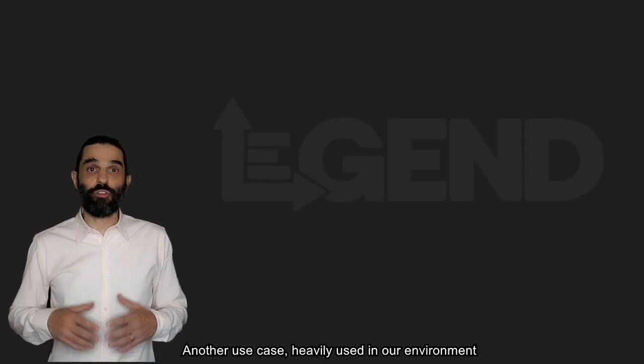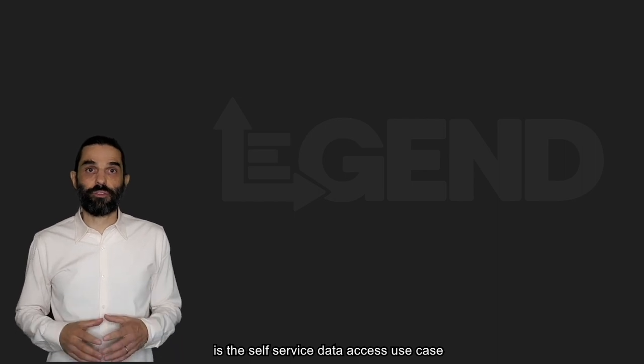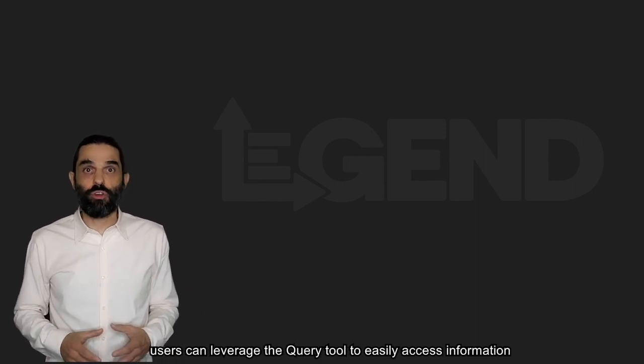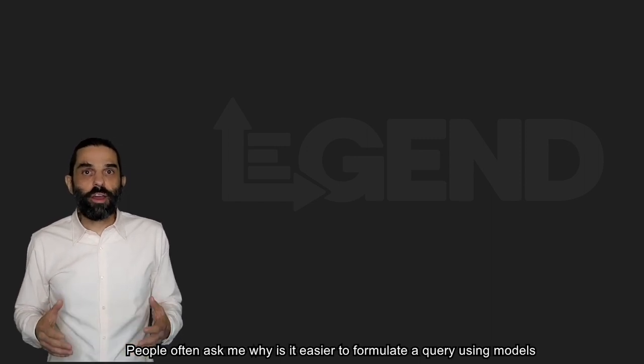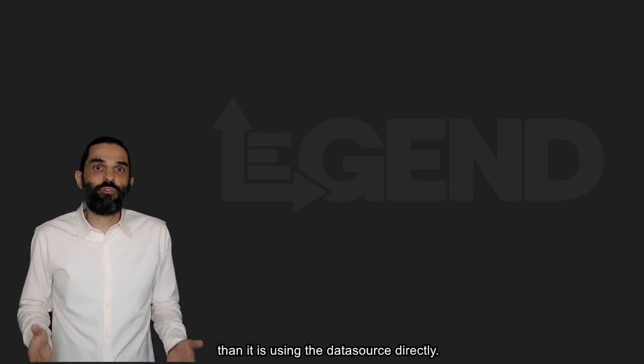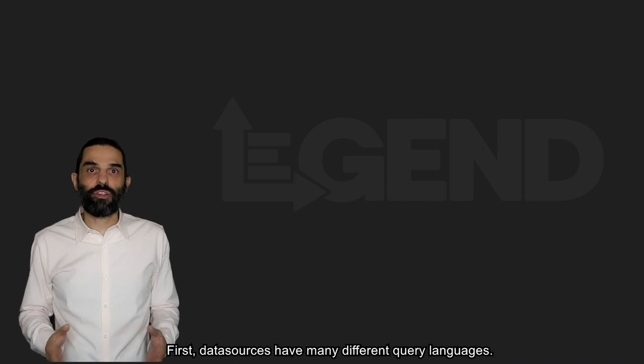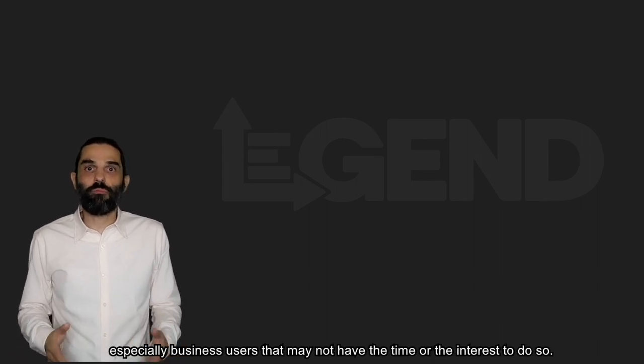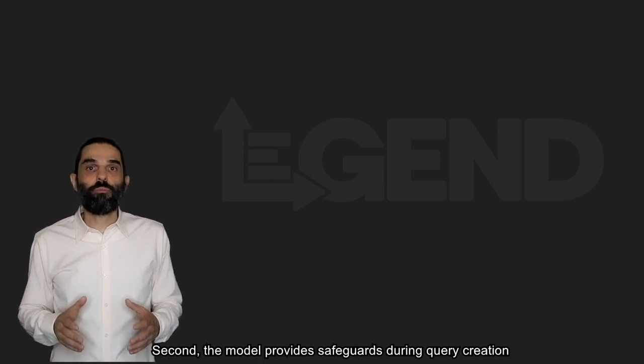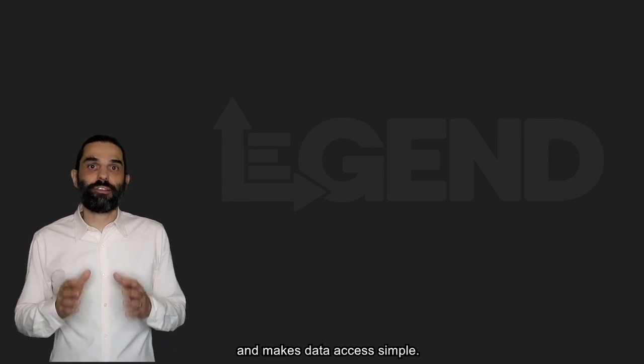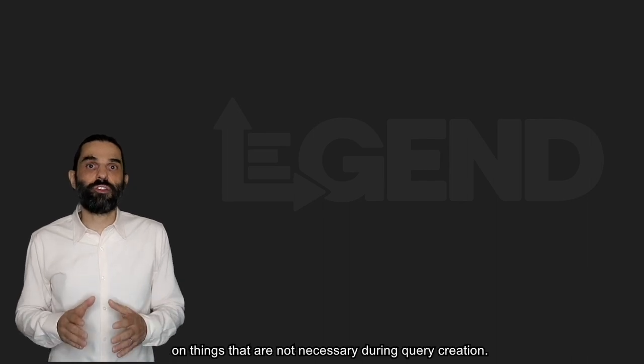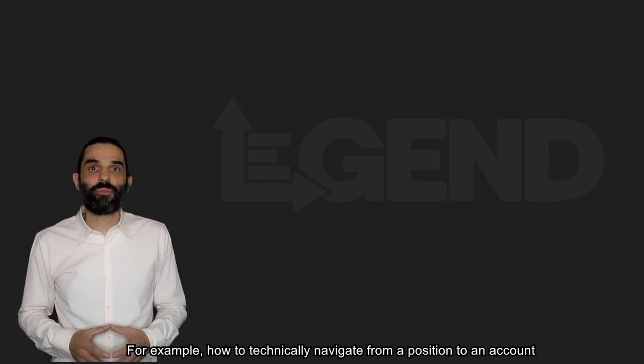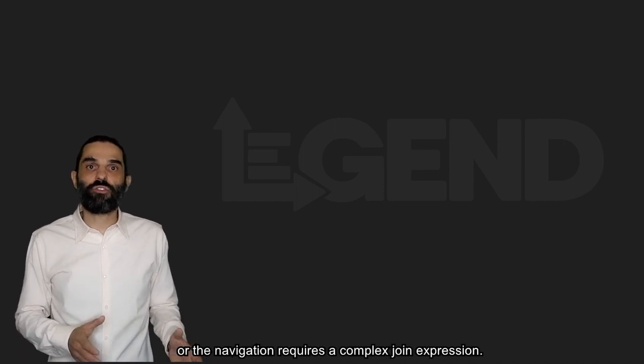Another use case heavily used in our environment is a self-service data access use case. Once a model and the mapping to a data source have been defined in Studio, users can leverage the Query tool to easily access information. People often ask me why is it easier to formulate a query using models than it is using the data source directly. First, data sources have many different query languages. It may be hard to train all your users to know them all, especially business users that may not have the time or the interest to do so. Second, the model provides safeguards during query creation and makes data access simple. It also helps users not to waste time on things that are not necessary during query creation, for example how to technically navigate from a position to an account, especially if they are stored in different systems or the navigation requires a complex join expression.